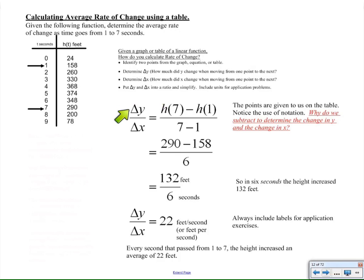So here's how we start. I always write change in y over change in x. And then I show the height at seven seconds, subtract the height at one second. The question I have for the class is, why do we subtract? How does subtraction show the change? So think about that. Why are we subtracting to figure out the change in y?